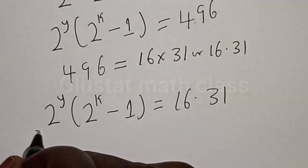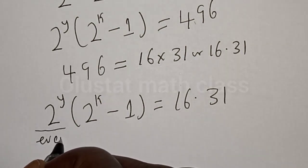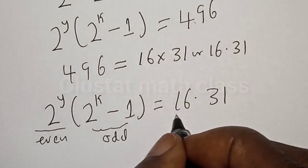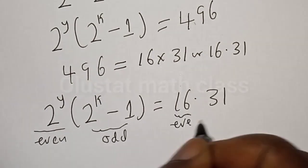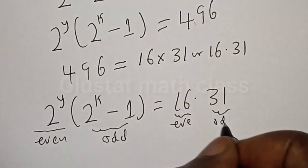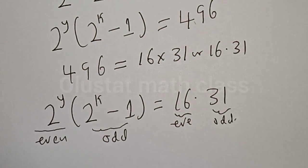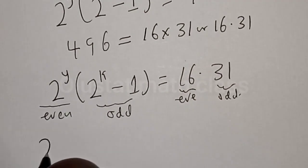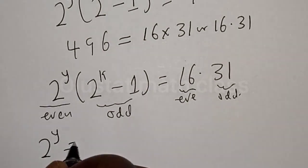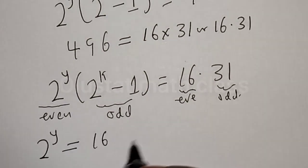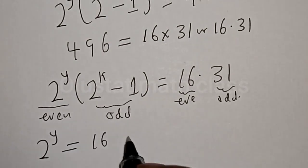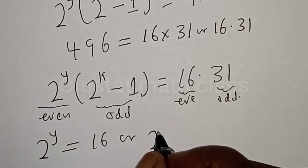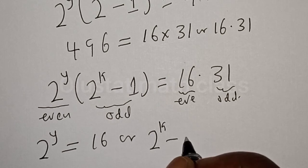Now, comparing both sides: 2 raised to power k minus 1 is odd, and 2 raised to power y is even. By comparing, we have 2 raised to power y is equal to 16, and 2 raised to power k minus 1 is equal to 31.